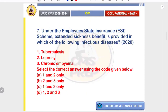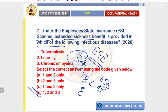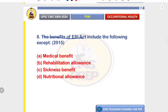Under the ESI scheme, extended sickness benefit is provided for 34 chronic illnesses including TB, leprosy, and empyema — so all listed options are correct. Extended sickness benefit is continued beyond 91 days of the regular sickness benefit. The correct option is one, two, and three.